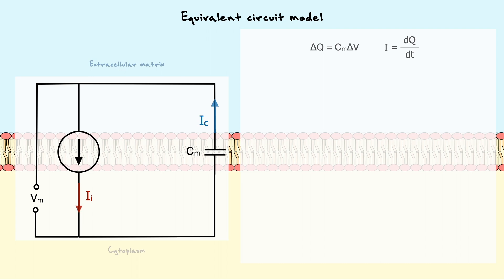Secondly, we know from Kirchhoff's current law that the sum of all currents at a node is zero. Because of our conventions, the injected current will be negative since there are positive charges going inside the cell. As such, the capacitive current is equal to the injected current. We can replace the capacitive current by its definition dQ over dt.